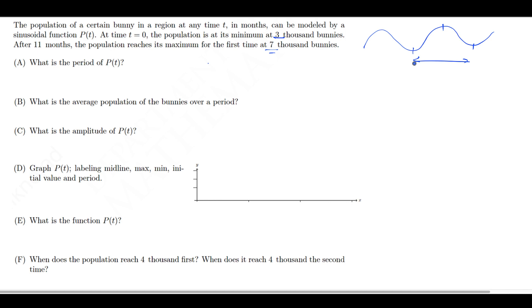The min and max are also given. So the first question is asking me, what is the period for P(t)? Period comes from that 11 months, that's half of the period, so one half of P is equal to 11, therefore P is equal to 22 months.